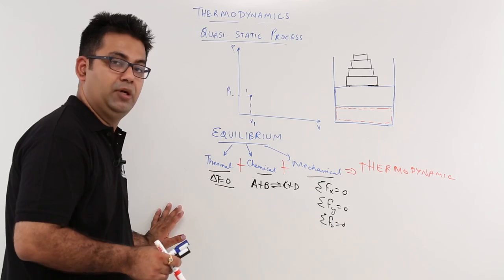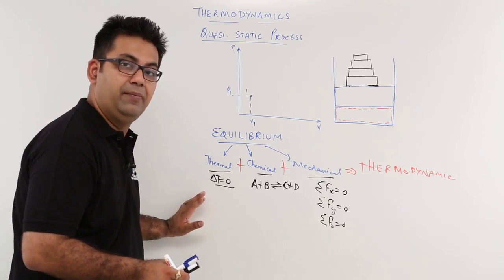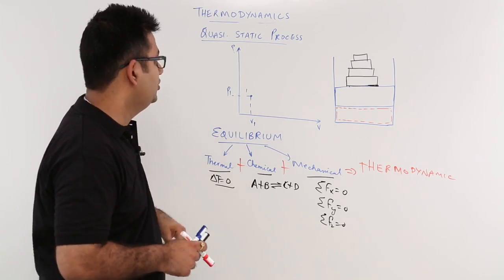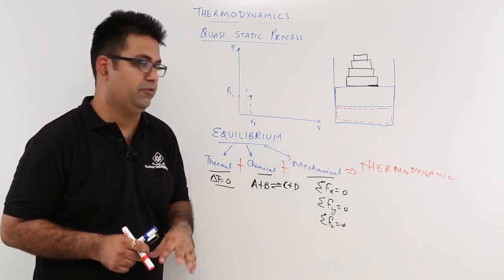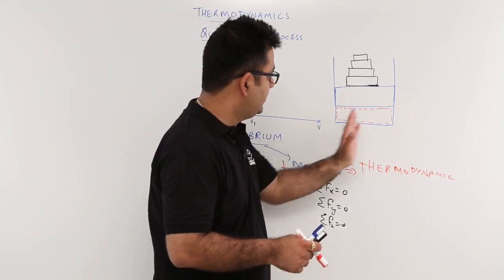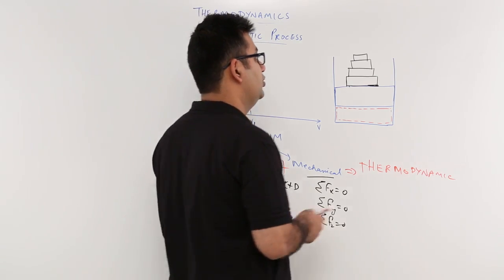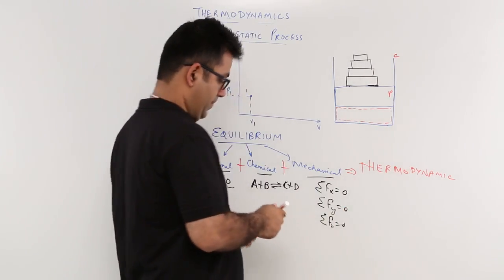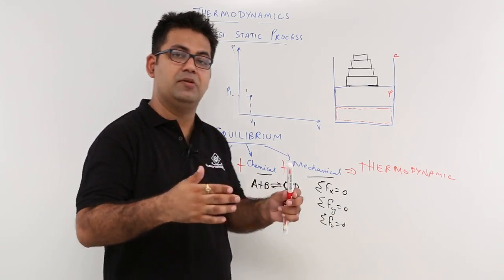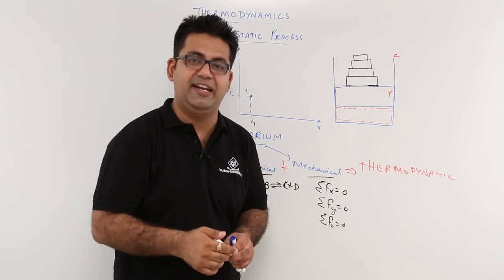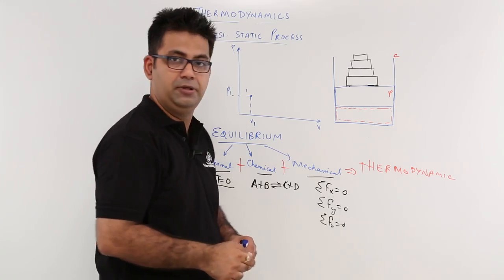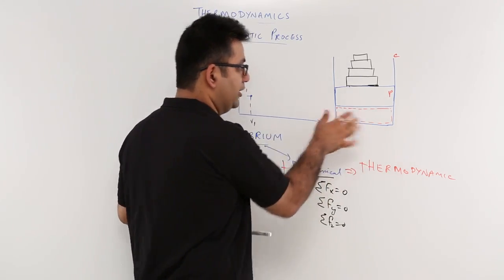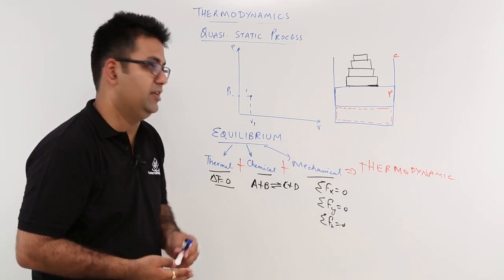After having understood the concept of equilibrium, let us move on to understand the quasi-static process. For that, let us consider a piston-cylinder arrangement. This is the cylinder and this is the piston. On top of the piston, you have some small weights placed, and you have gas trapped inside this piston-cylinder space.